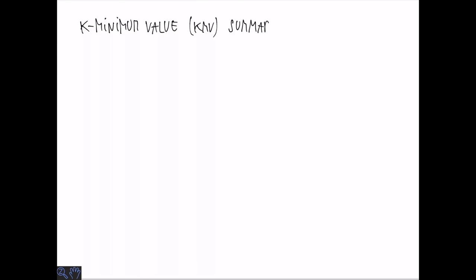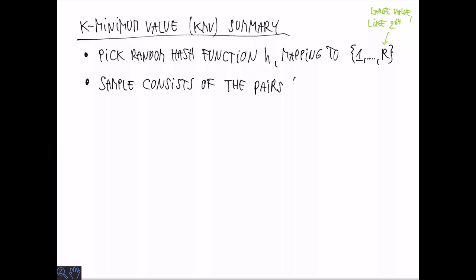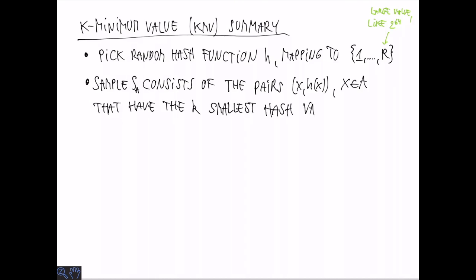A particular way of doing coordinated sampling is the K-Minimum Value or KMV summary. To construct such a summary, we pick a random hash function h that maps to some large range of size r. Here all that matters is that r is large enough, we could pick it to be 2 to the 64 or some other large values such that we have very few collisions. The sample now consists of pairs of elements x and corresponding hash values h of x that have small hash values. In particular, we store the k smallest hash values where k is the space we have available.